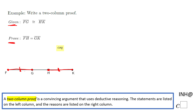Now I'm going to look at an informal way to prove it. For example, if FG is 5, then HK would be 5 also because they are congruent. And if GH is 3, then from F to H I'm going to have 5 plus 3, which is 8. From G to K, I'm also going to have 5 plus 3, which is 8. So this is a way to see how this proof is going to work.